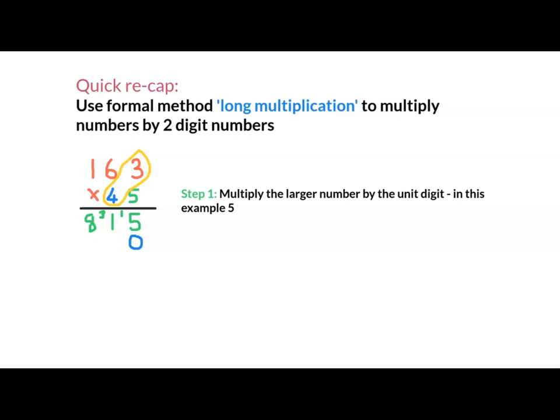4 times 3 is 12. 4 times 6 is 24, and add the 1 is 25. 4 times 1 is 4, and then add the 2 is 6.